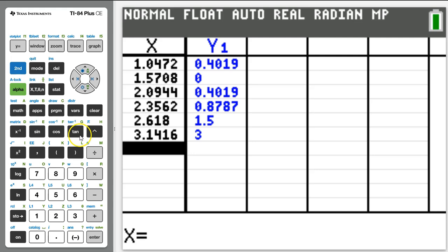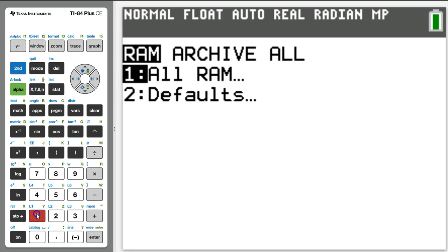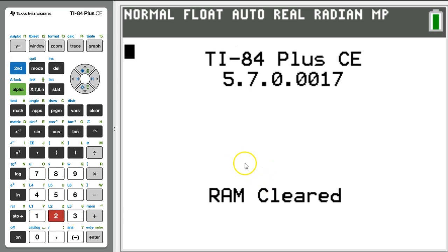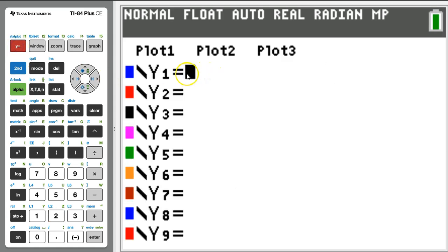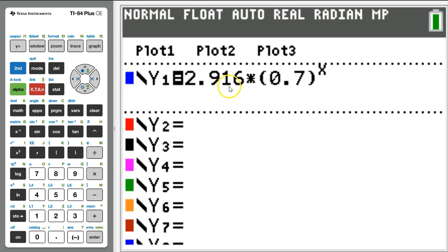Go ahead and type the function g in as y1 on the calculator. Actually, I recommend first resetting your calculator by hitting 2nd plus 7,1,2. That's 2nd plus 7,1,2. Ta-da! Fresh calculator. So hit your y equals button and enter g of x right here. It should look like this.